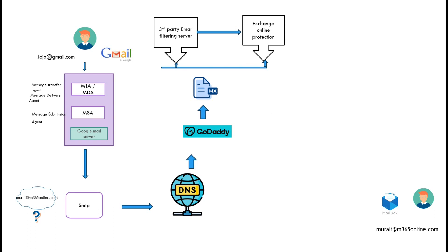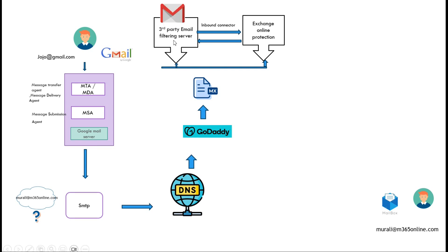Let us assume that the MX record for m365only.com is pointed to a third-party email filtering server — say Barracuda or Proofpoint. When we integrate a third-party email filtering server with Exchange Online Protection, we create an inbound connector in Exchange Online so that mail from the Sophos or third-party server is accepted. We also create an outbound connector that sends email from Exchange Online to the third-party filtering server. With the MX record pointing there, email is delivered to the third-party filtering server, and via the inbound connector it is then routed to Exchange Online Protection.